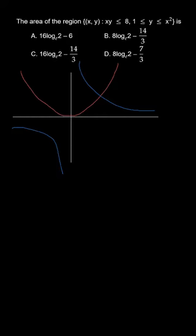So we can draw a graph of xy equal to 8, what is it? Hyperbola. So these two blue lines are y equal to 1 and y equal to x squared. For y equal to x squared, it will be a parabola, and y equal to 1 will be a straight line parallel to x axis.